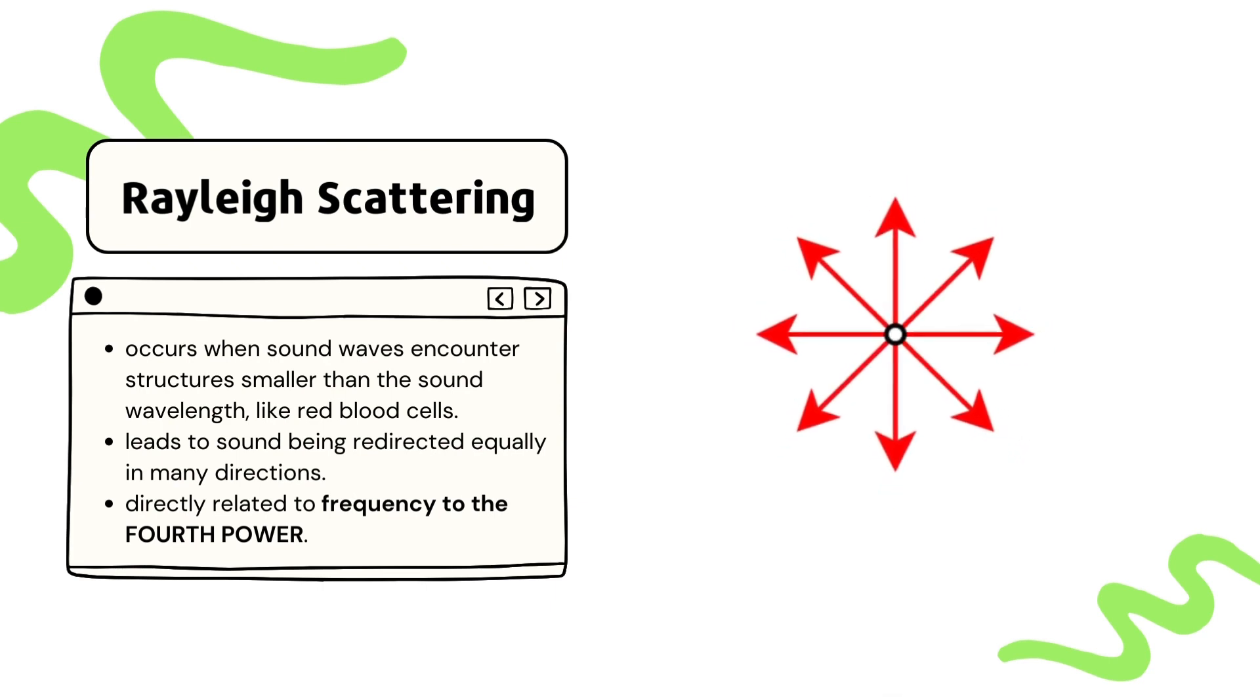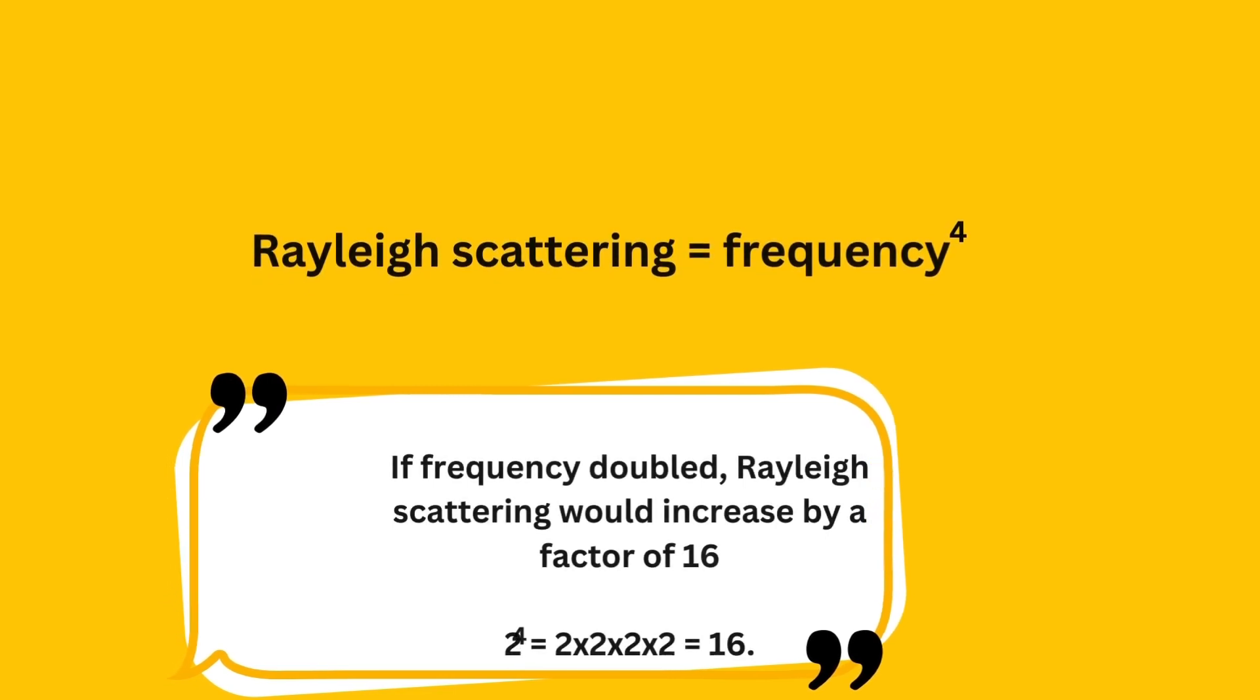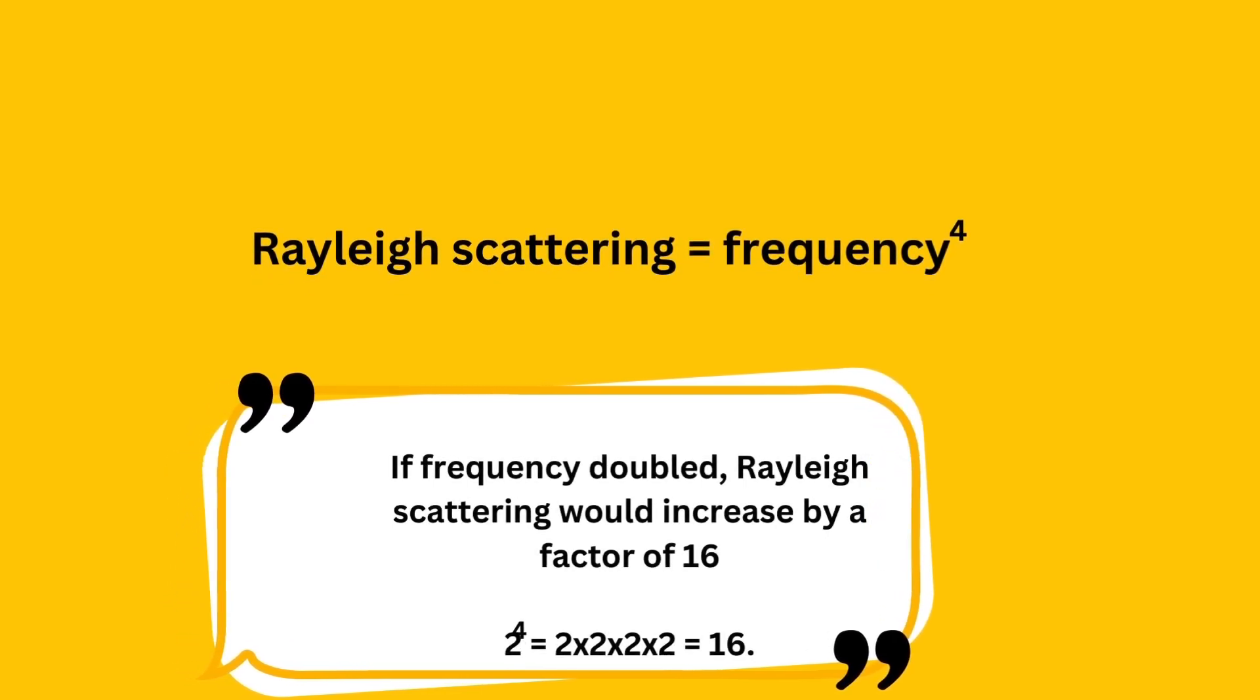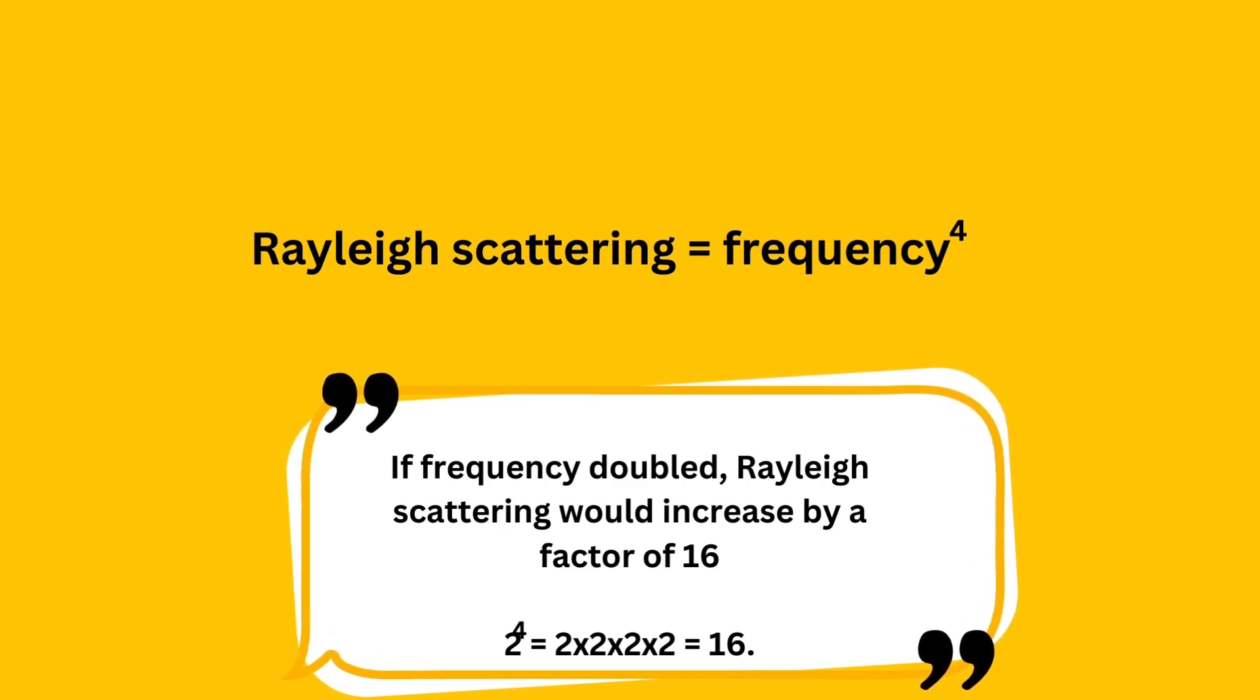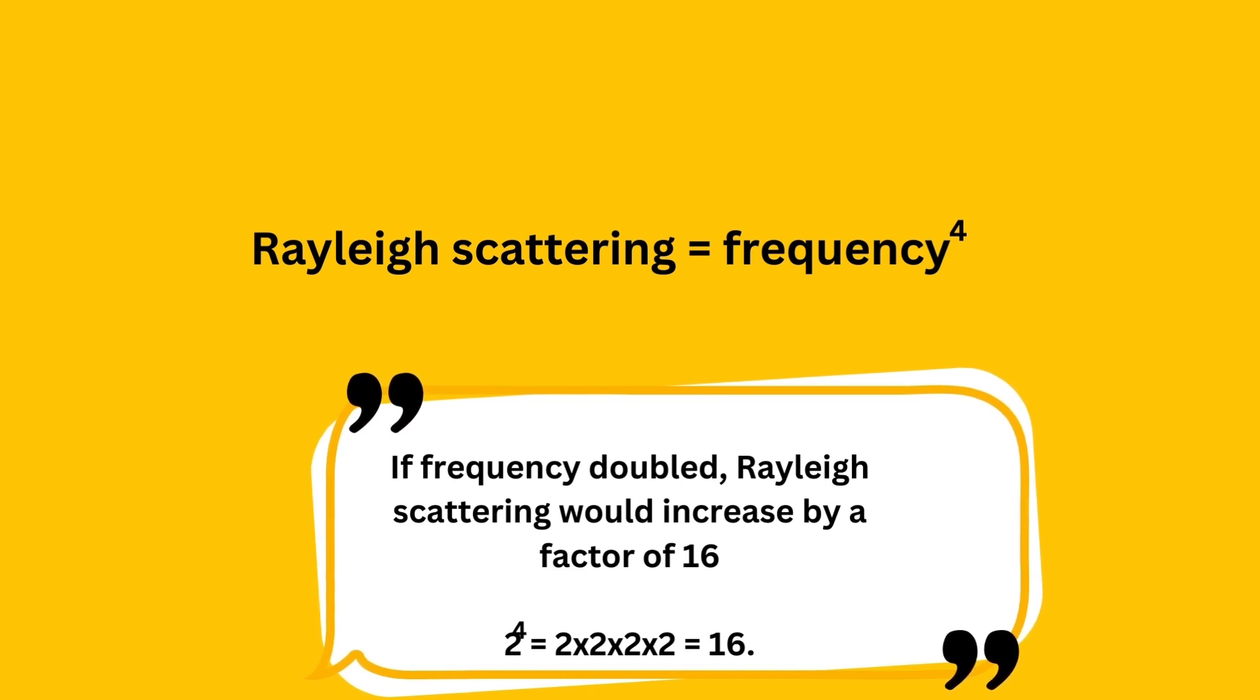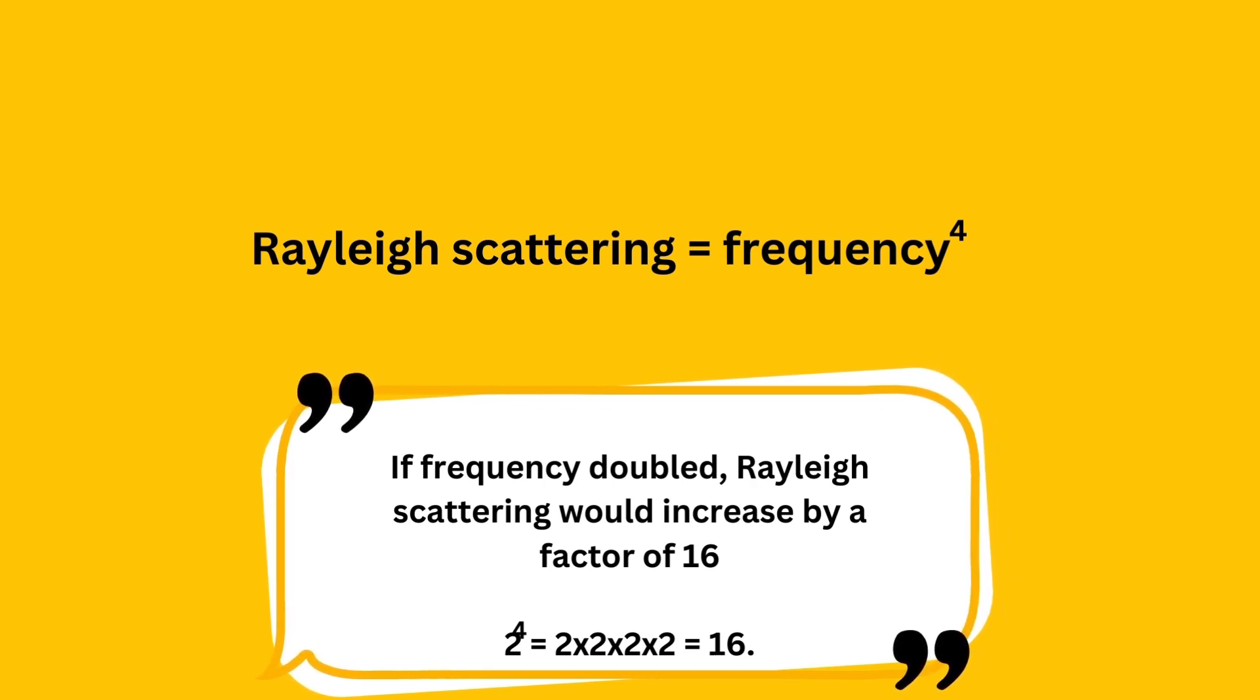Just like regular scattering, Rayleigh scattering is directly related to frequency. However, Rayleigh scattering is actually related to frequency to the power of 4. In other words, as the frequency of the sound wave increases, the amount of Rayleigh scattering increases exponentially. For example, if the frequency doubles or increased by a factor of 2, the amount of Rayleigh scattering would be 16 times greater, because 2 to the power of 4 is equal to 16.